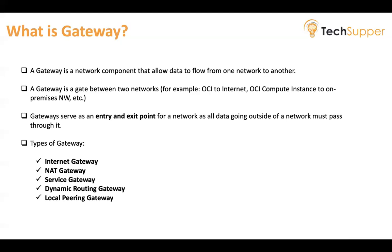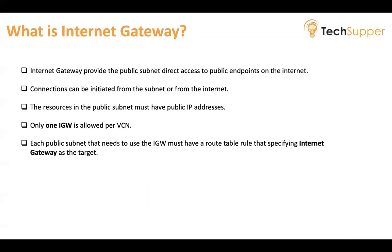Let's talk about Internet Gateway. As the name represents — internet — whenever you need to send traffic to the internet or you want incoming traffic inside your OCI from the internet, you have to use a gateway called Internet Gateway. It provides public subnet direct access to the public endpoints on the internet. Connections can be initiated from the subnet or from the internet, meaning it's bidirectional traffic.